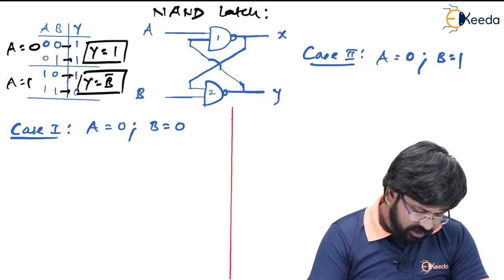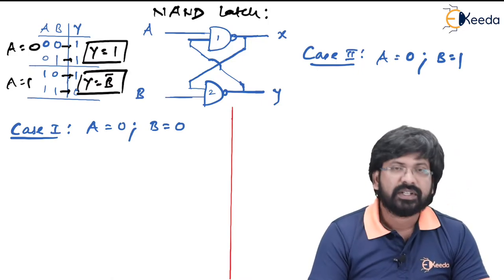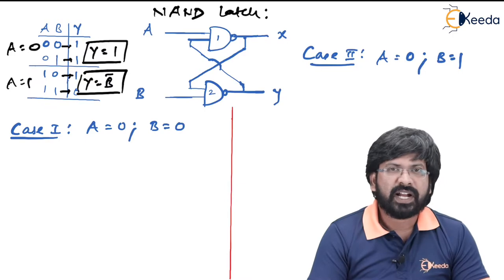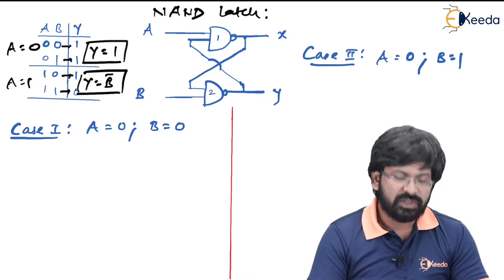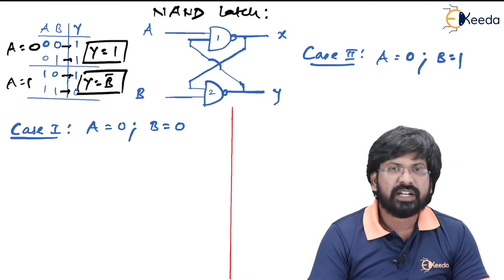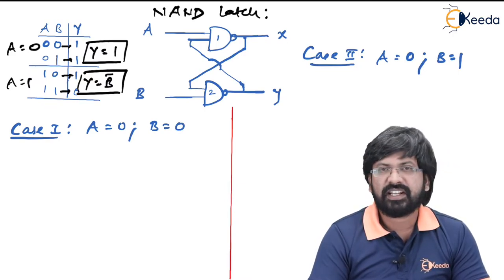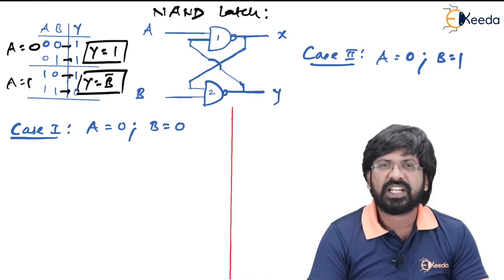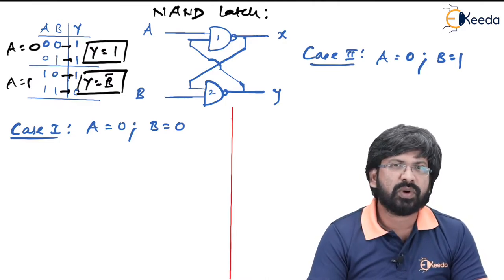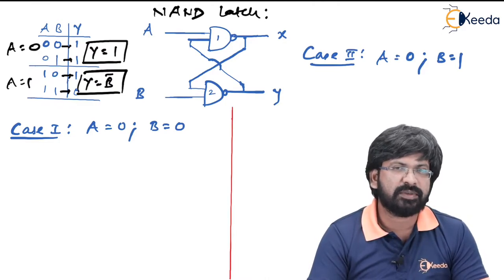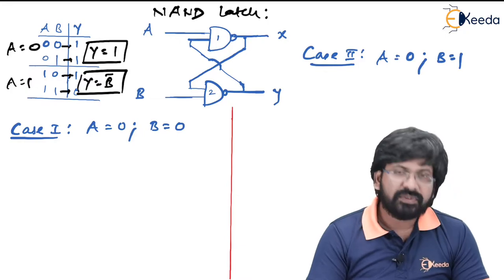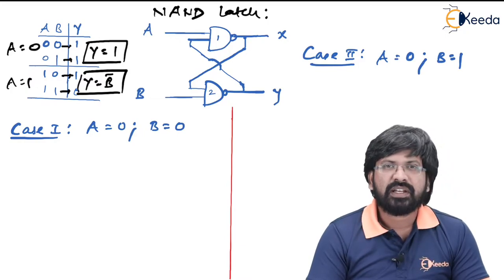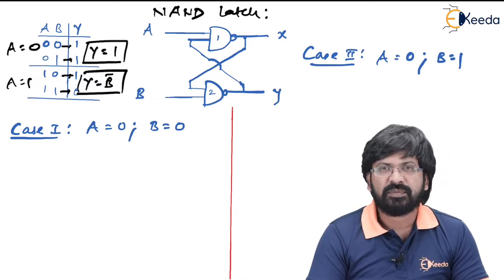Let us verify the property again. The property of NAND gate is that when one of the inputs is fixed to 0, it is disabled and therefore output is 1 irrespective of what you have applied on the other input. Whereas when one of the inputs is fixed to 1, it acts as a NOT gate for the other input.